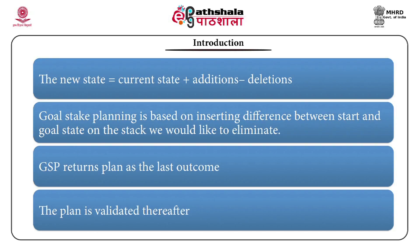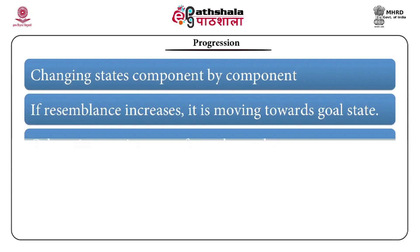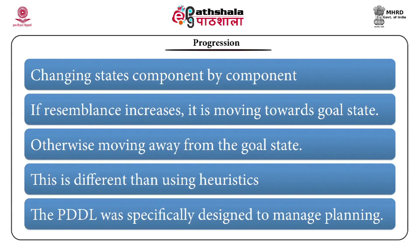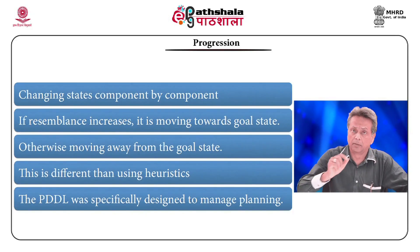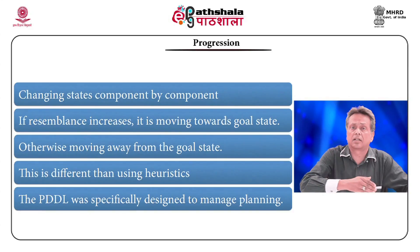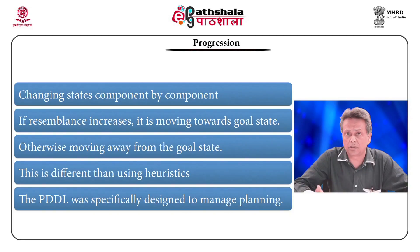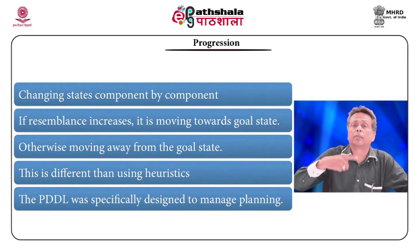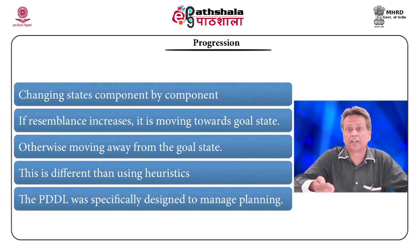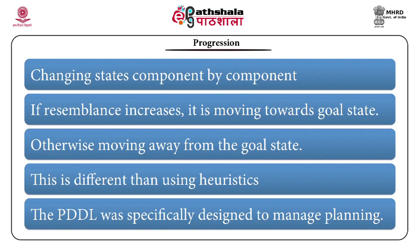Once the plan is constructed it is validated — that will be the last thing we learn in this module. To begin with progression: we are changing states component by component. We would like to remove components in the start state that are not in the end state, and add components not in the start state but in the end state. However, we cannot arbitrarily add or remove components — we must apply actions, and actions require prerequisites.